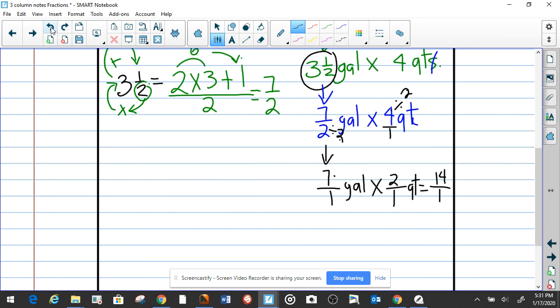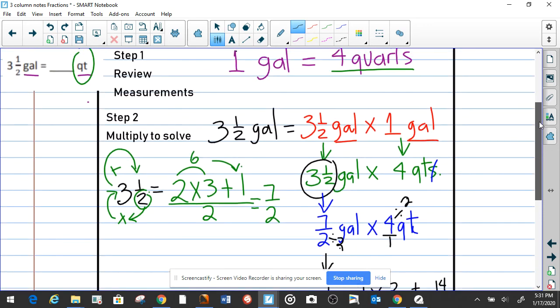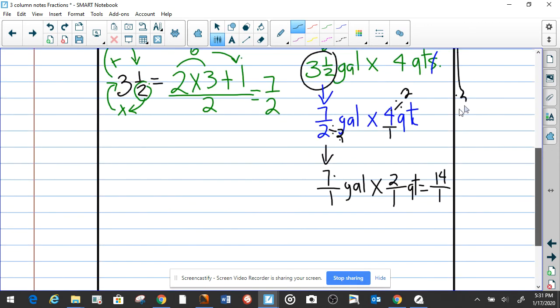So now our answer is done. It's 14, the answer. Three and one half gallons equals 14 quarts.